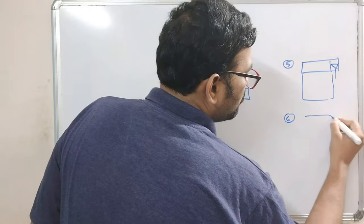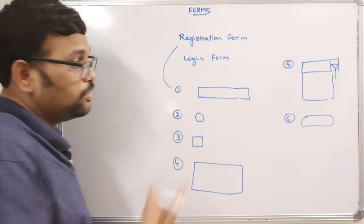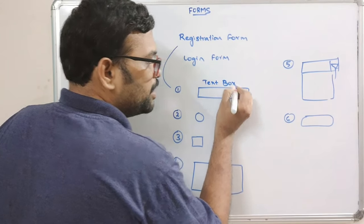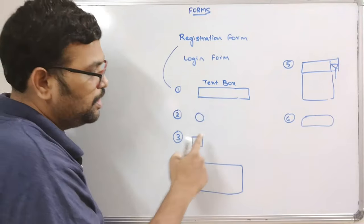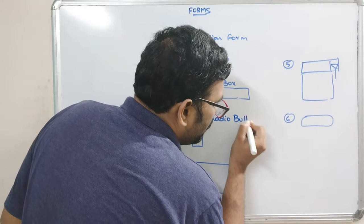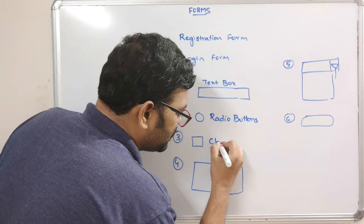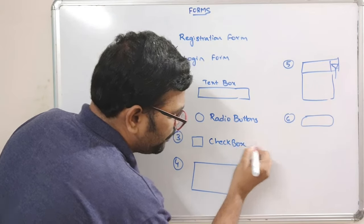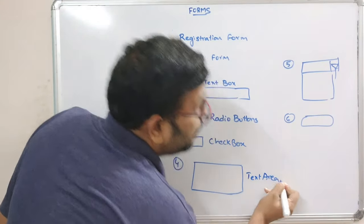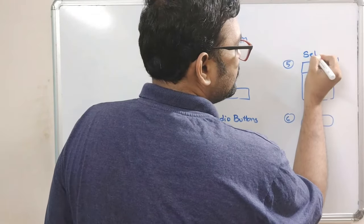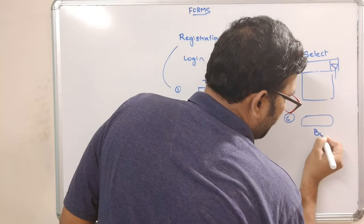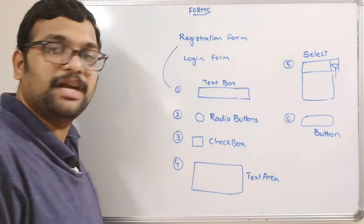There are also some buttons. These symbols are normally called a text box. This type of circle symbols we call radio buttons. This type of square symbols we call checkboxes. This larger rectangle is called a text area. There is also a select tab and a button.